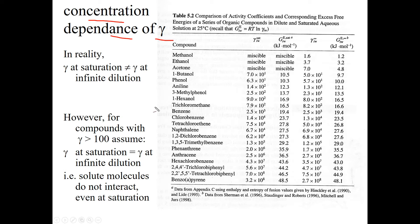This table, table 5.2 from the book, is comparing the activity coefficients and corresponding excess free energies of a bunch of different organic compounds in both dilute and in saturated systems. The infinity symbol means we're at infinite dilution and sat means we're at saturation. The activity coefficient does change slightly depending on whether you're at saturation or at infinite dilution.